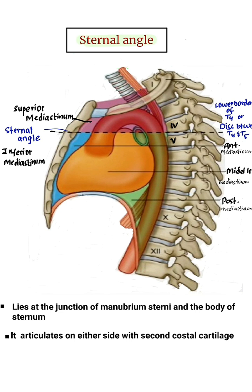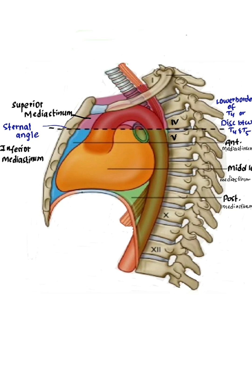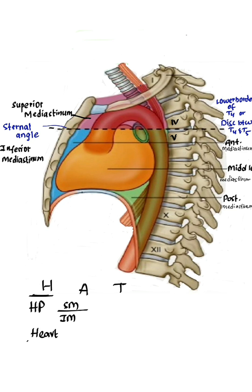The sternal angle corresponds to the second rib. Now, remember the mnemonic: HAT. H — the horizontal plane through this level separates the superior mediastinum from the inferior mediastinum. Another H — Heart: it corresponds to the upper border of the heart.